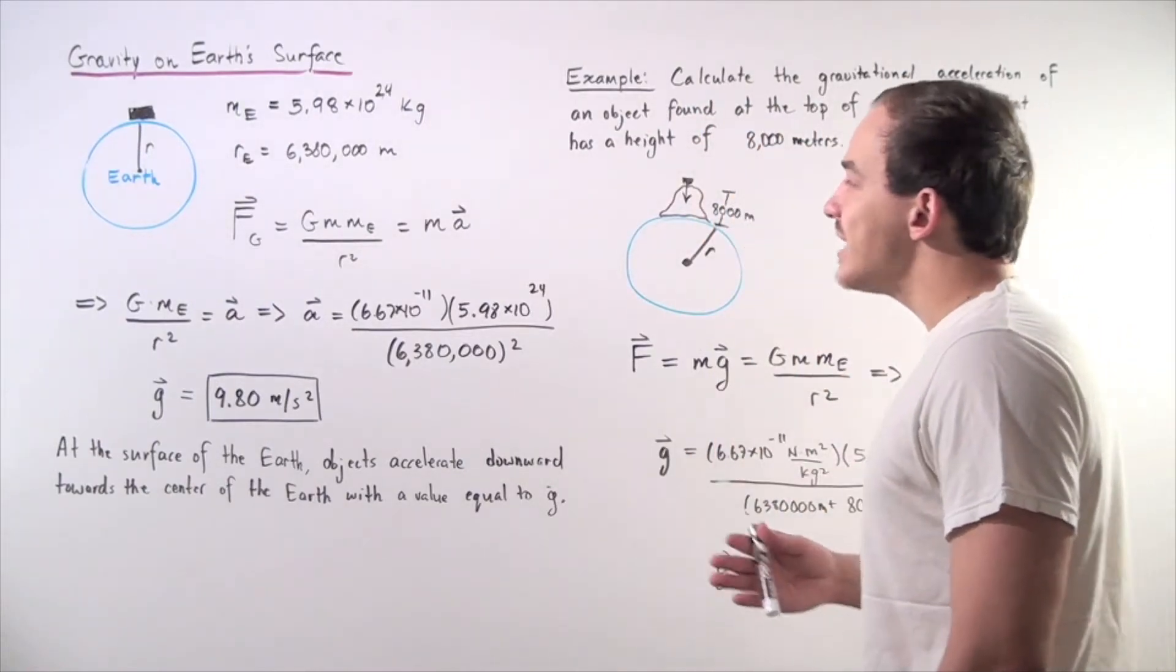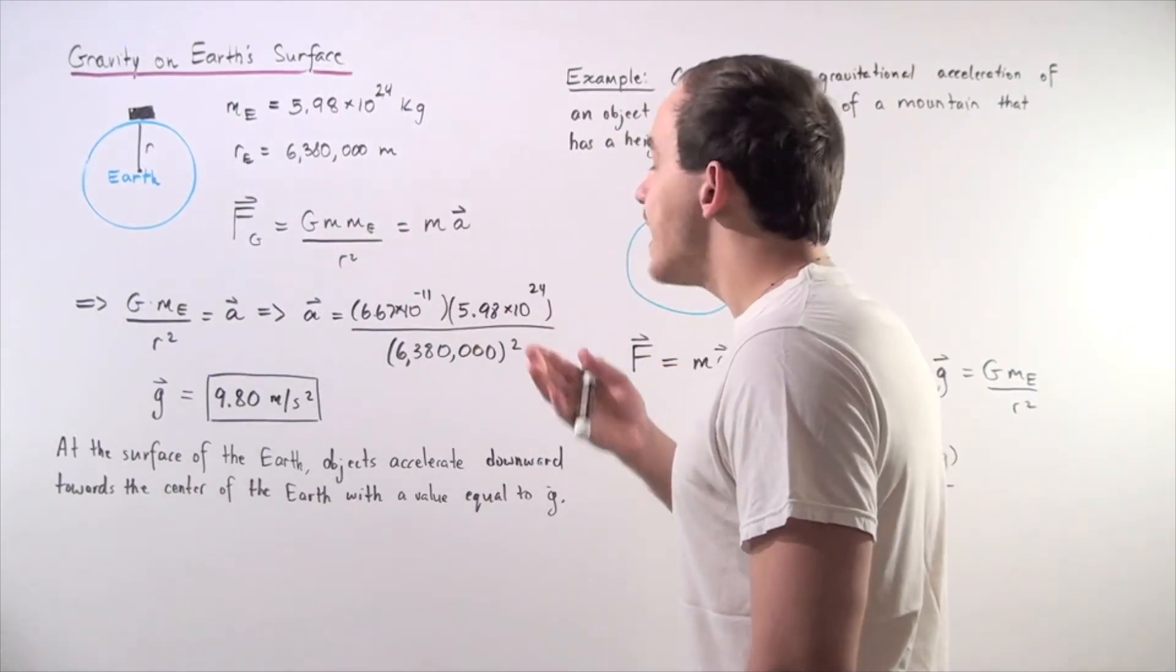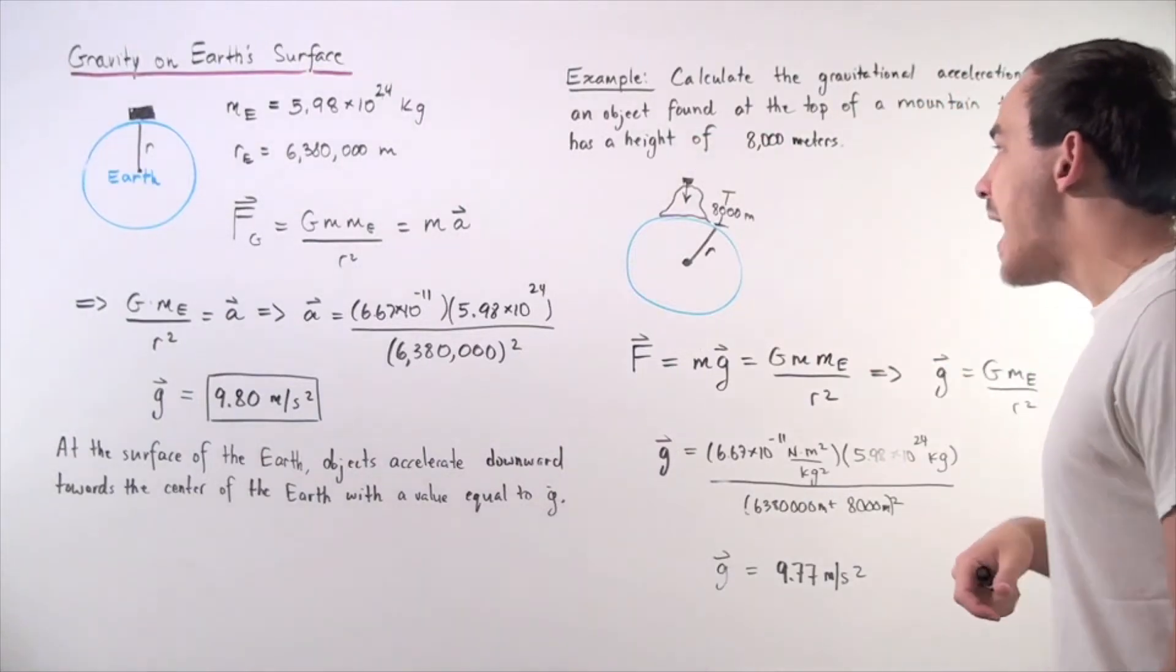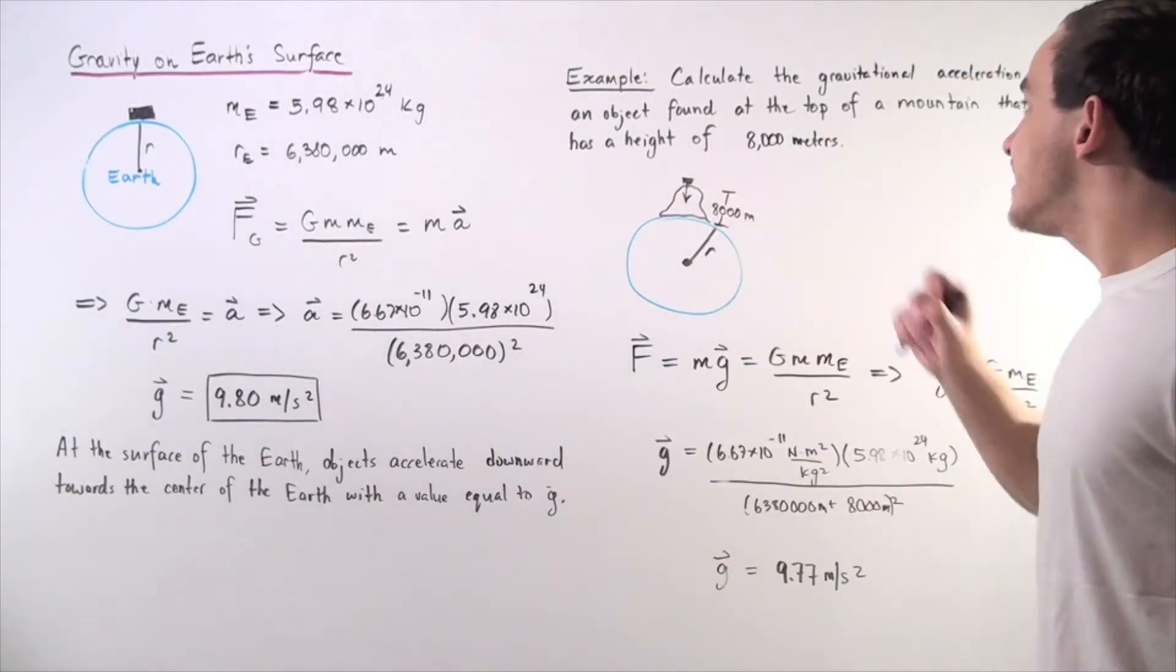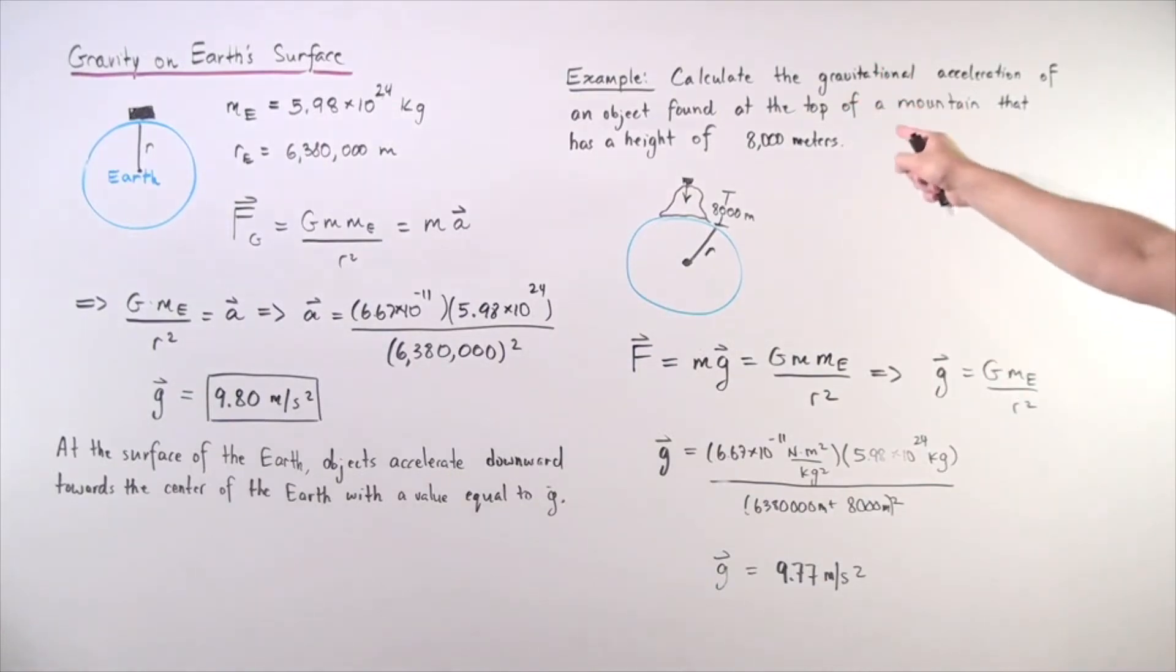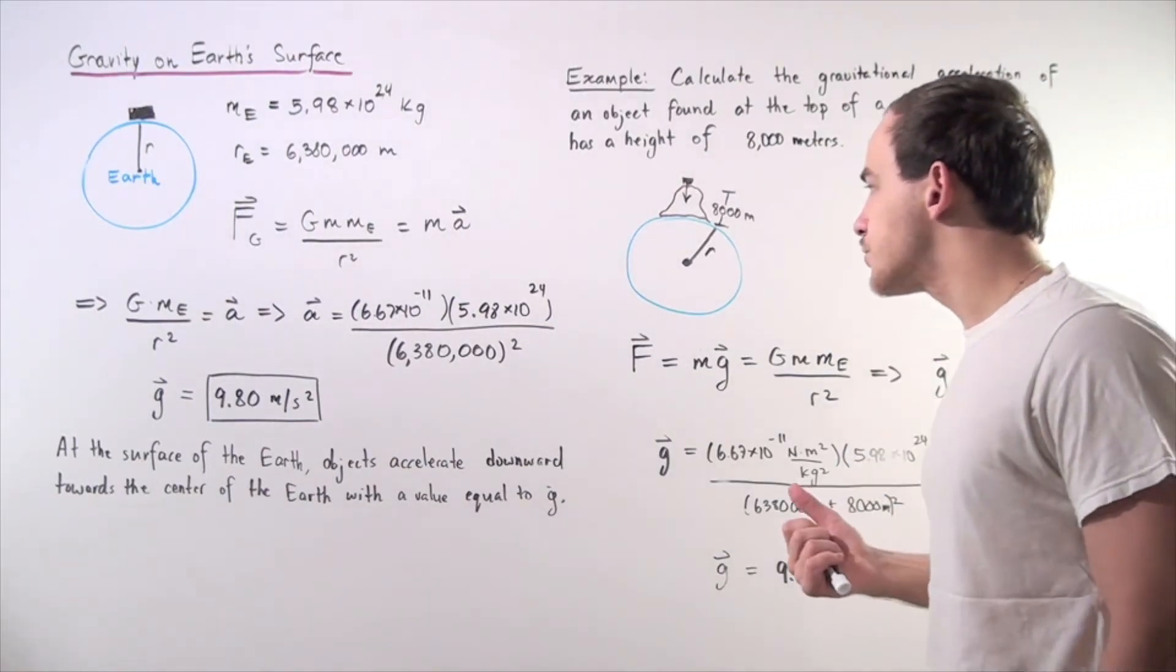Now let's suppose I take the same object, and I place it on top of a mountain that is 8,000 meters high. So, we want to calculate the gravitational acceleration of that object found on top of our mountain that has a height of 8,000 meters.